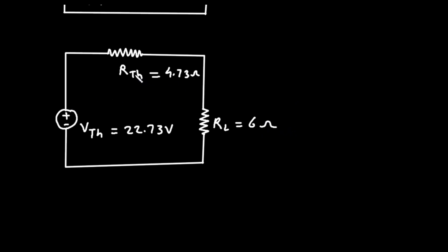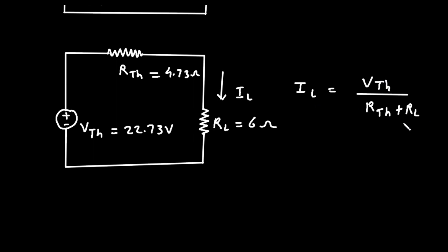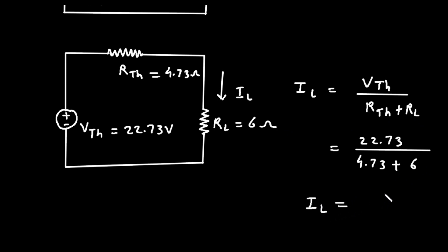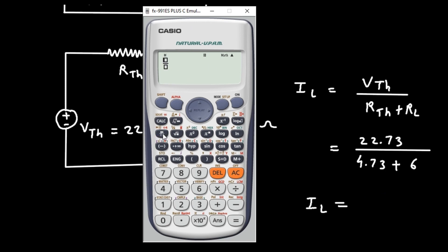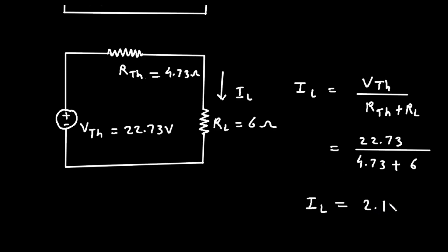Using Ohm's law, the load current IL = VTH / (RTH + RL) = 22.73 / (4.73 + 6) = 22.73 / 10.73 = 2.118 Ampere.